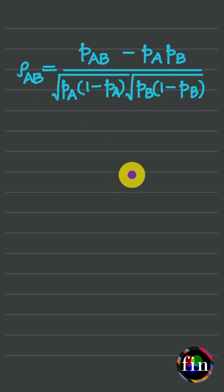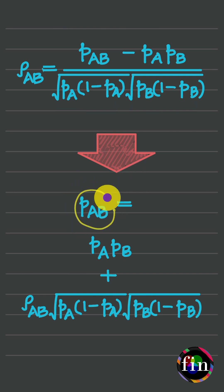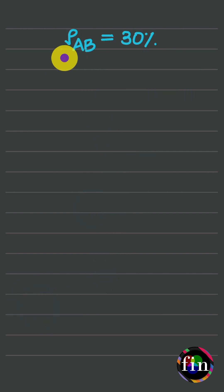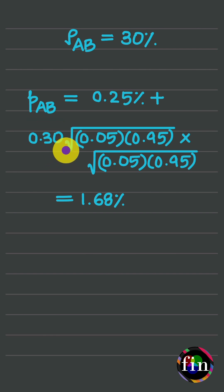This formula can be rearranged to arrive at the joint probability after accounting for default correlation. Now, if I assume a default correlation of 30%, the joint probability of default for my two loans comes out to be 1.68%.